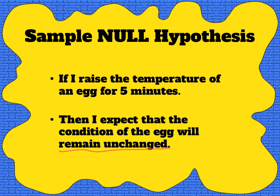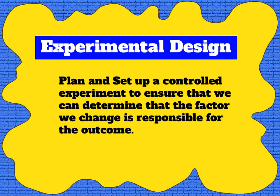This also means that when we finish the experiment it is likely that our hypothesis will be refuted. Next, the scientist needs to document the experimental design. Other scientists reading about the work will need to see that the scientist created a controlled experiment that generated data in a way that ensures that the variable we tested was responsible for the outcome. You will need to identify those design elements in any experiment that we do or read about.